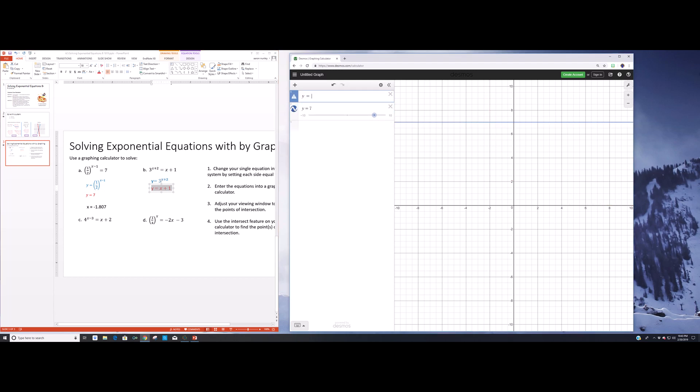y equals 3 exponent key, here again, remember that's above the 6, to the x plus 2. And then your second equation is y equals x plus 1. When I graph those, do you notice anything interesting about that system? This one has no solutions. There are no values that I can stick in for x, where we're going to have an intersection here. Or in other words, it is impossible for this equation to have any kind of a solution. Pretty cool, right?